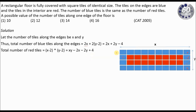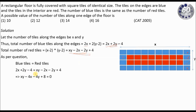It is given in the question that the blue tiles and the red tiles are equal. So I can equate the two expressions: 2X plus 2Y minus 4 equals XY minus 2X minus 2Y plus 4. Solving this, I finally get the expression: XY minus 4X minus 4Y plus 8 equals 0.